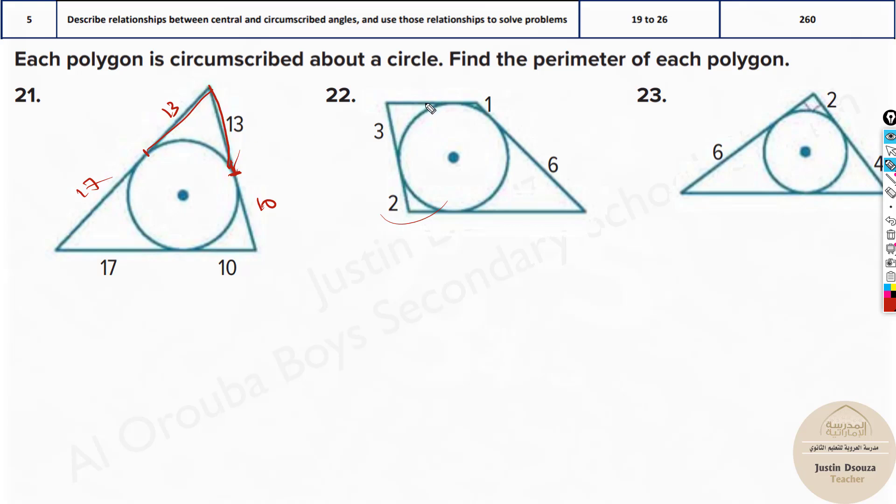Over here, we have 3. So this is 3. 1 is there. Over here, it'll be 1. See, till over here, it's 3. This part is 1. 6, 6 and 2 and 2. So add them up. You will get the answer. It's 12, 18, 19, 20, 21, 22, 24 over here. Same way you can do the others.